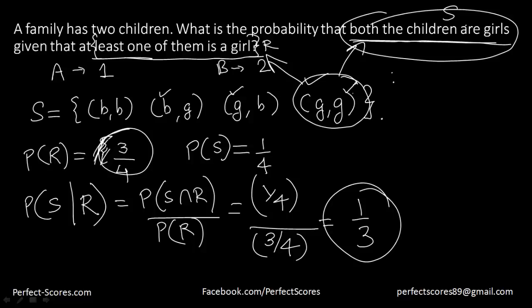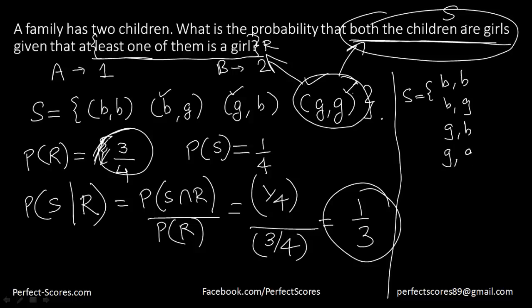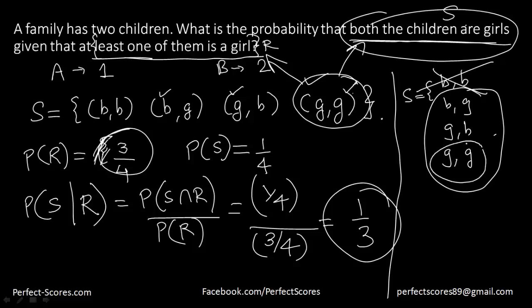You can also approach this logically. You have four cases: BB, BG, GB, GG. Since at least one of them is a girl has already happened, BB is gone — you have three favorable cases remaining. Out of those three, what is the probability that both are girls? That is one case out of three, so 1/3. This logical approach is useful for multiple choice questions; the formula approach is better for step-by-step subjective answers.